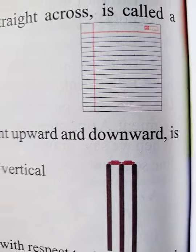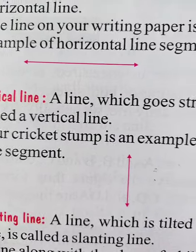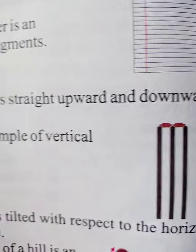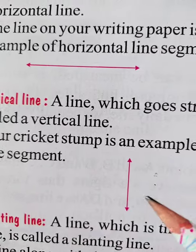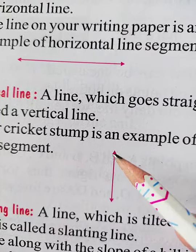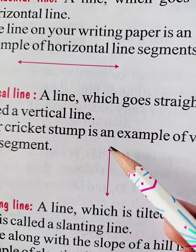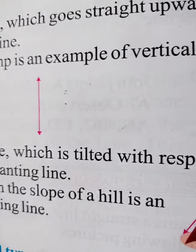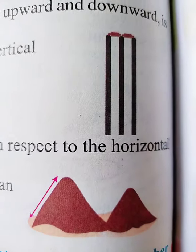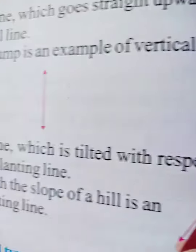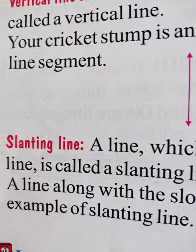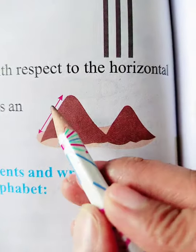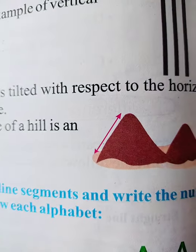These are your horizontal lines. And a vertical line is a line which goes straight upward and downward. Vertical line starts from the top and ends at the downside. And a slanting line — a line which is tilted with respect to the horizontal line — is called a slanting line. Like this shape here, that line is your slanting line.